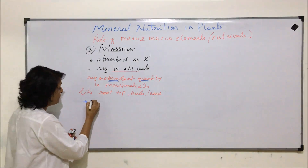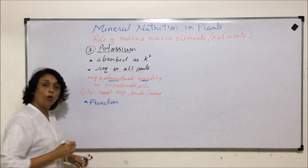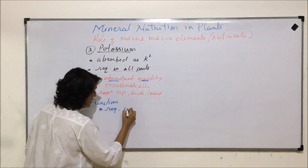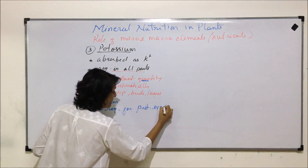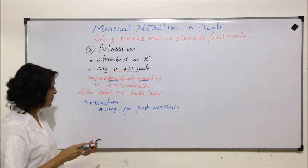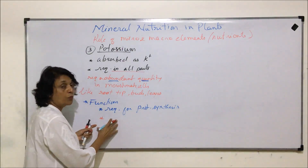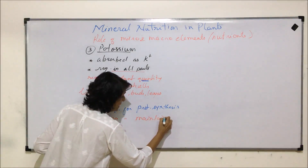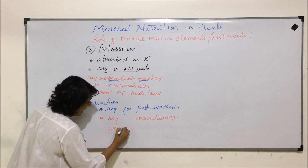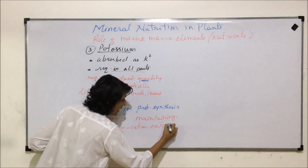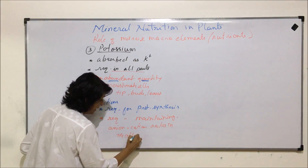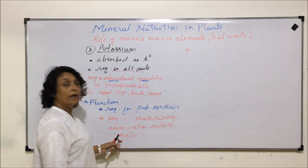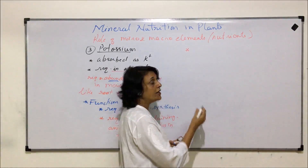The functions of potassium ions: they are required for protein synthesis. They are also responsible for maintaining the anion-cation ratio in the cells so that the osmotic potential can be maintained.